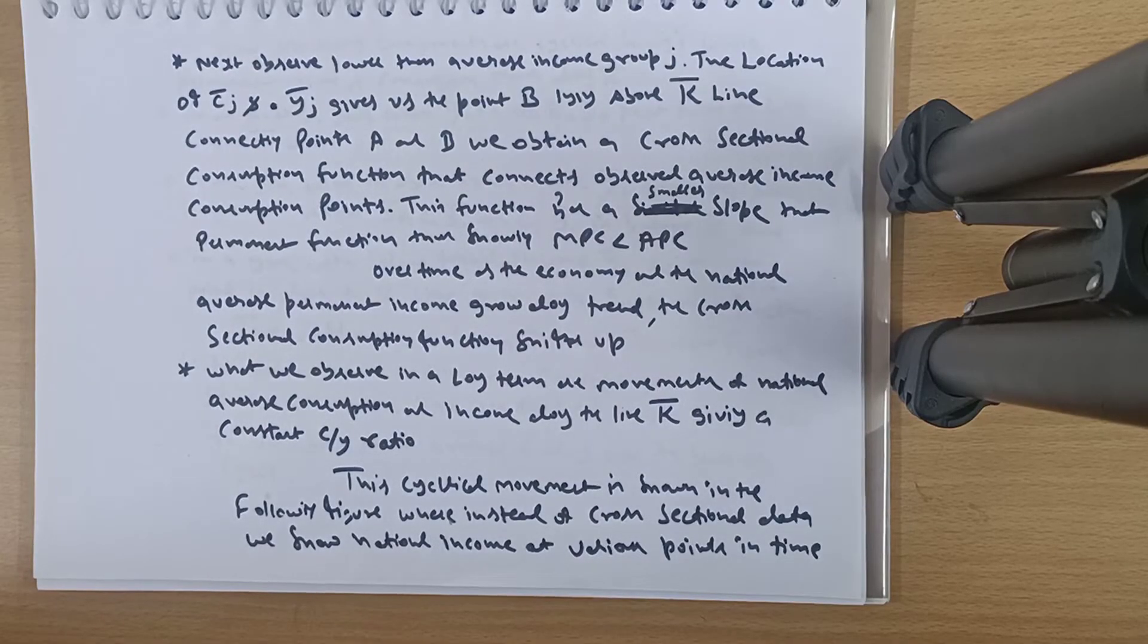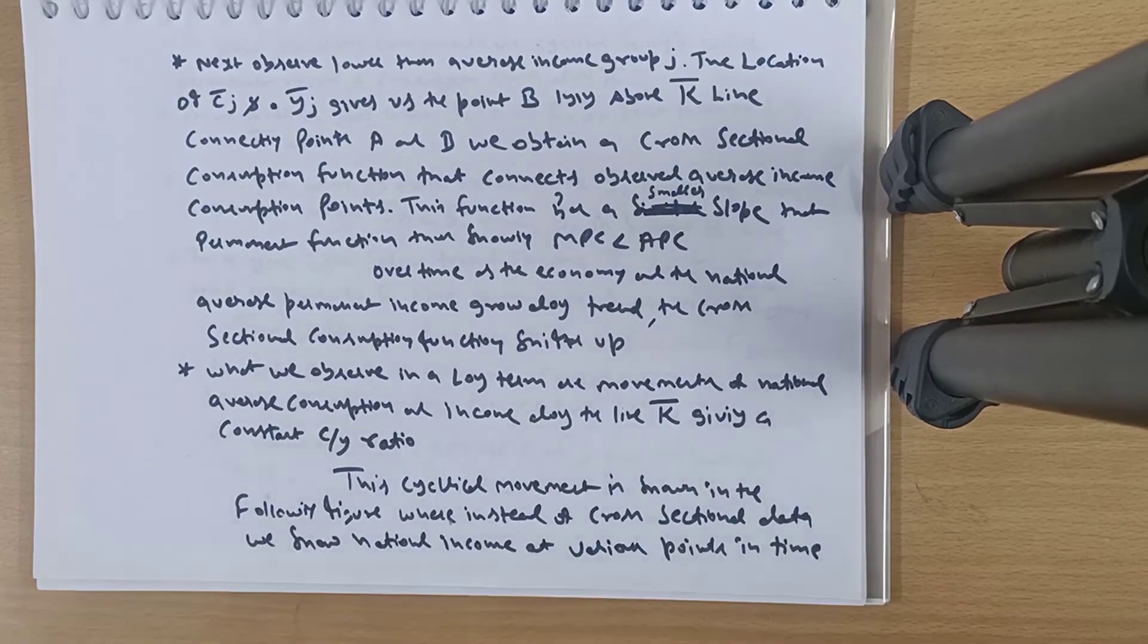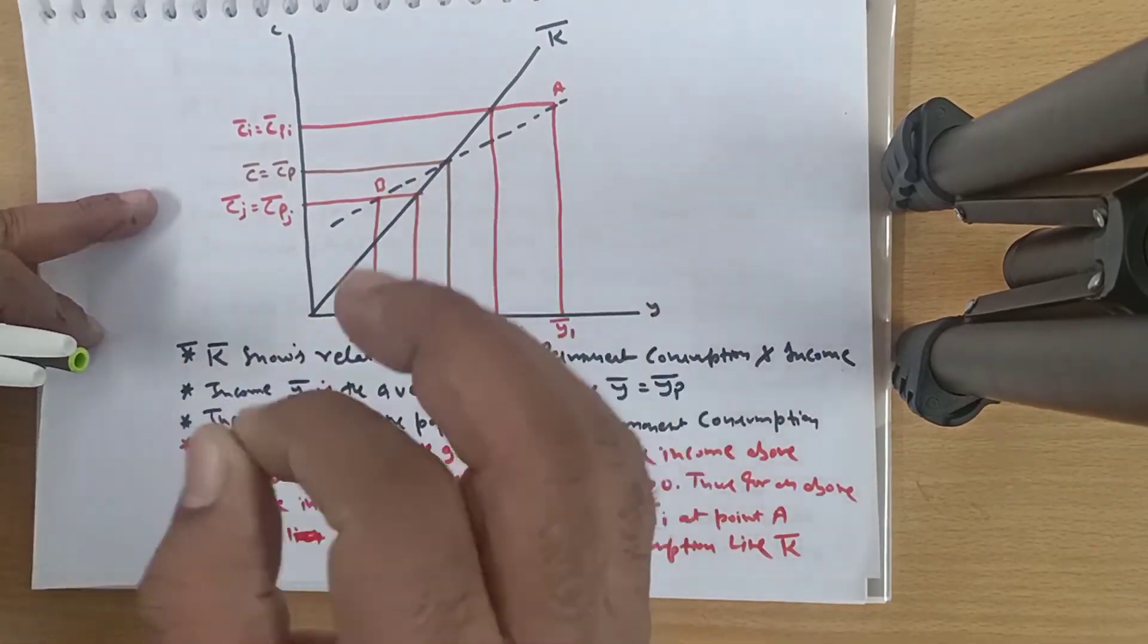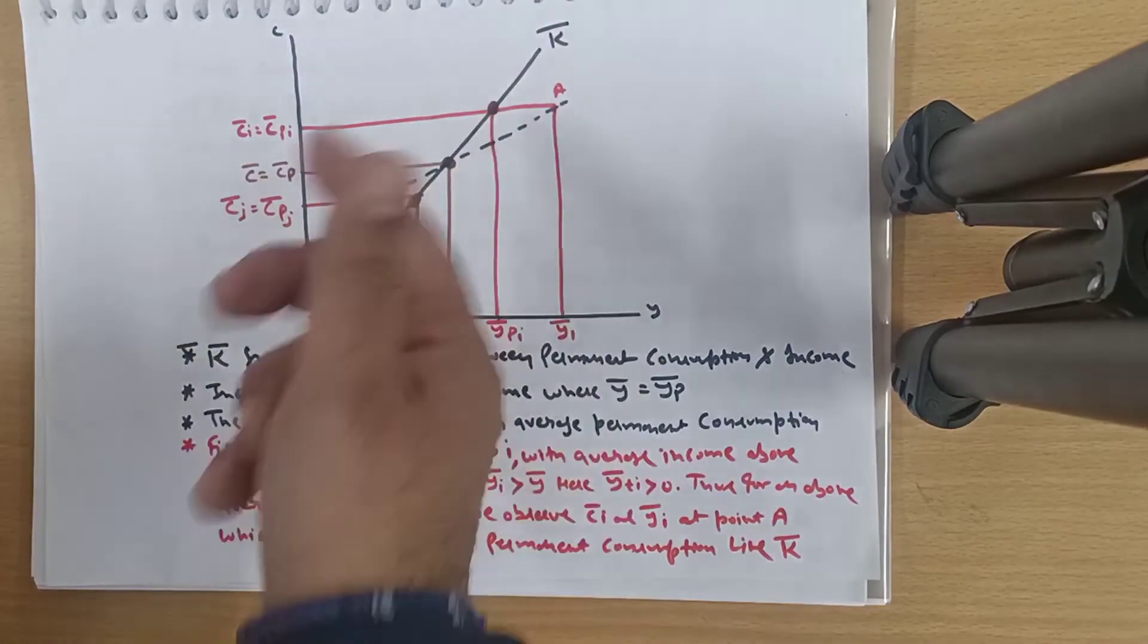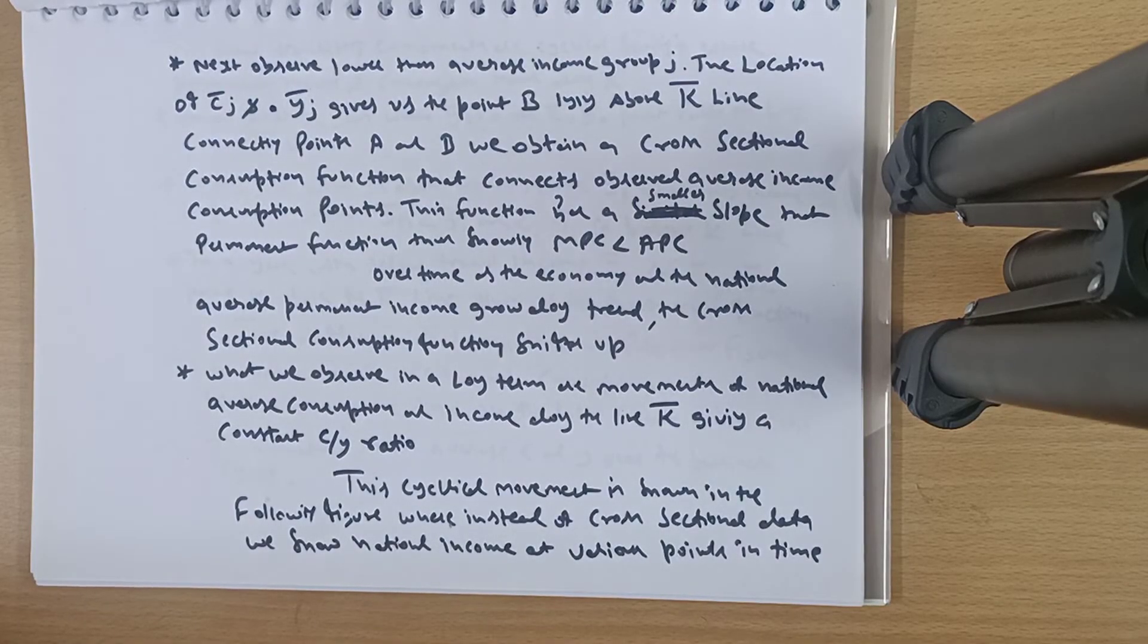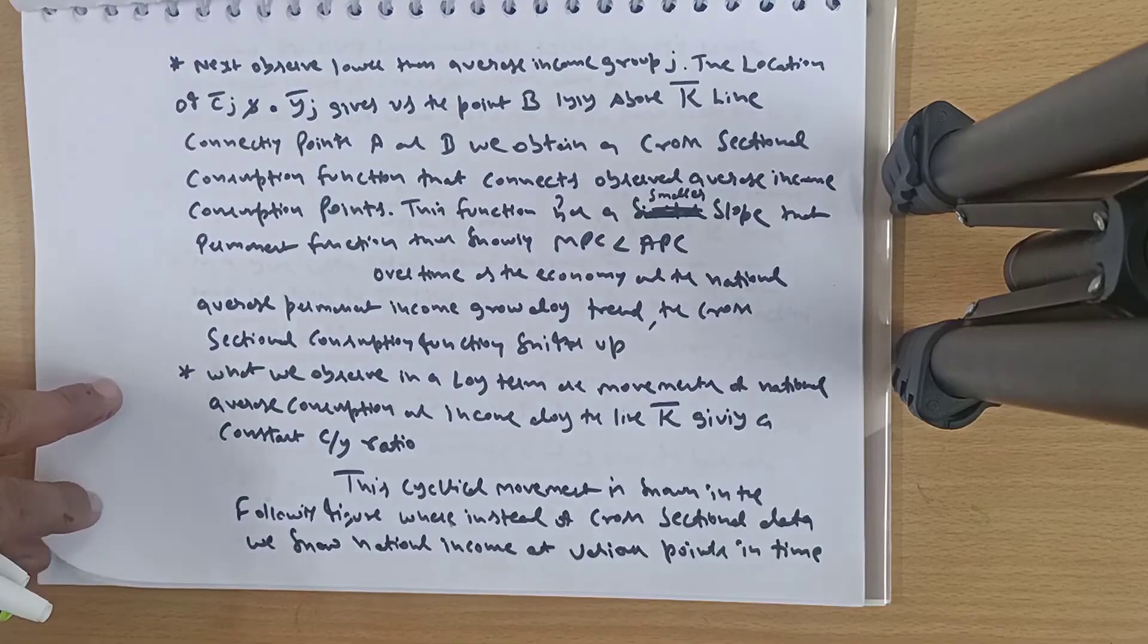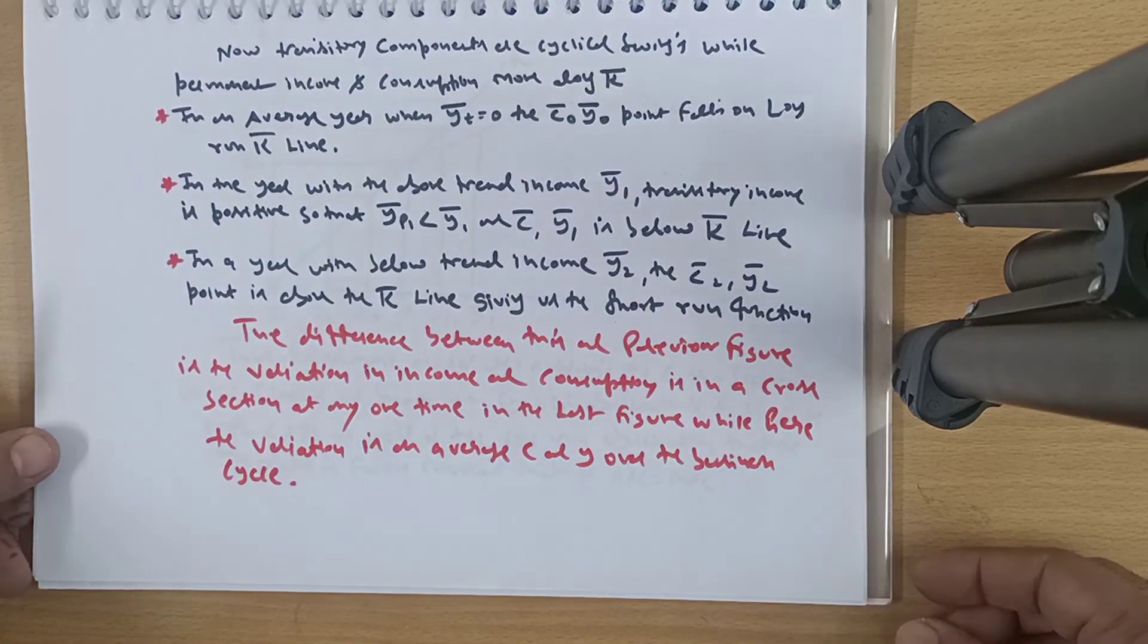Similarly for the lower income group: their permanent income is normally 9,000, equal to their expected earnings. But it's a bad year, so suppose it's 6,000. Their income today is 6,000, but their consumption won't be based on that 6,000. They will base consumption on permanent income, which is 9,000, because they are from a low-income group. The key point is that your consumption is not based on total income. Total income comprises both transitory and permanent income, but consumption depends only on permanent income. The location of point B gives us a cross-sectional consumption function connecting observed average income and consumption points. This function has a smaller slope than the permanent function, thus showing MPC is less than APC. Over time, as the economy and national average permanent income grow along trend, the cross-sectional consumption function shifts up. What we observe in the long term are movements of national average consumption and income along the k̄ line, giving a constant C/Y ratio. This provides a solution to Keynes' puzzle.